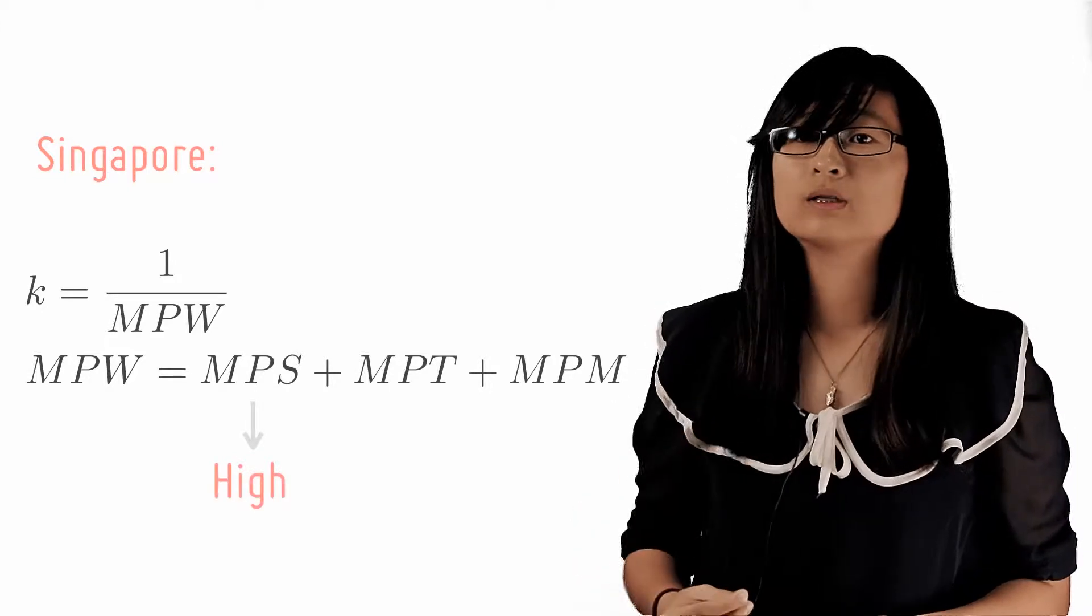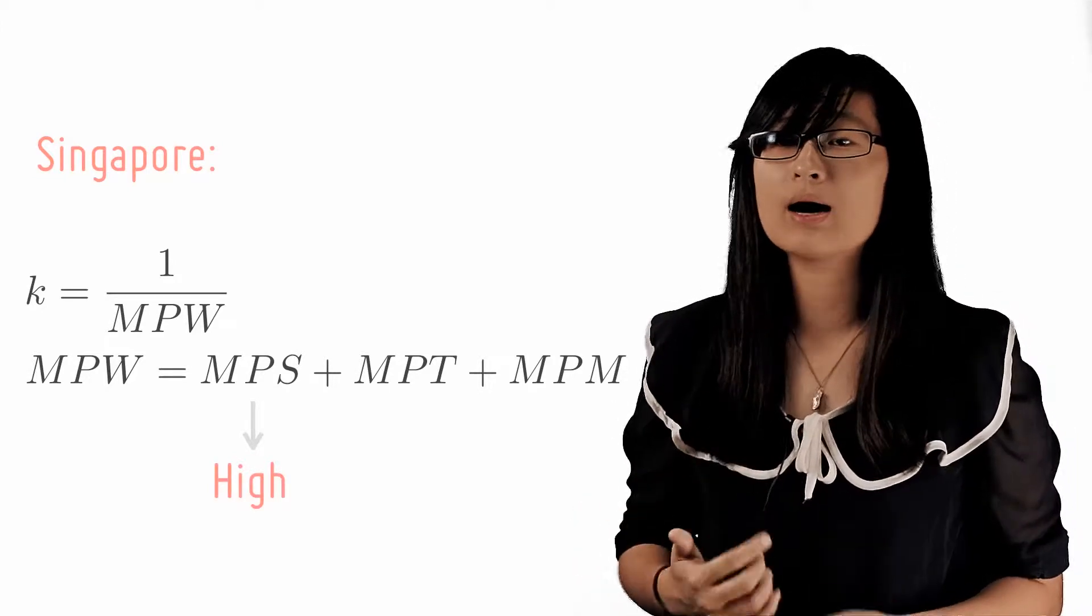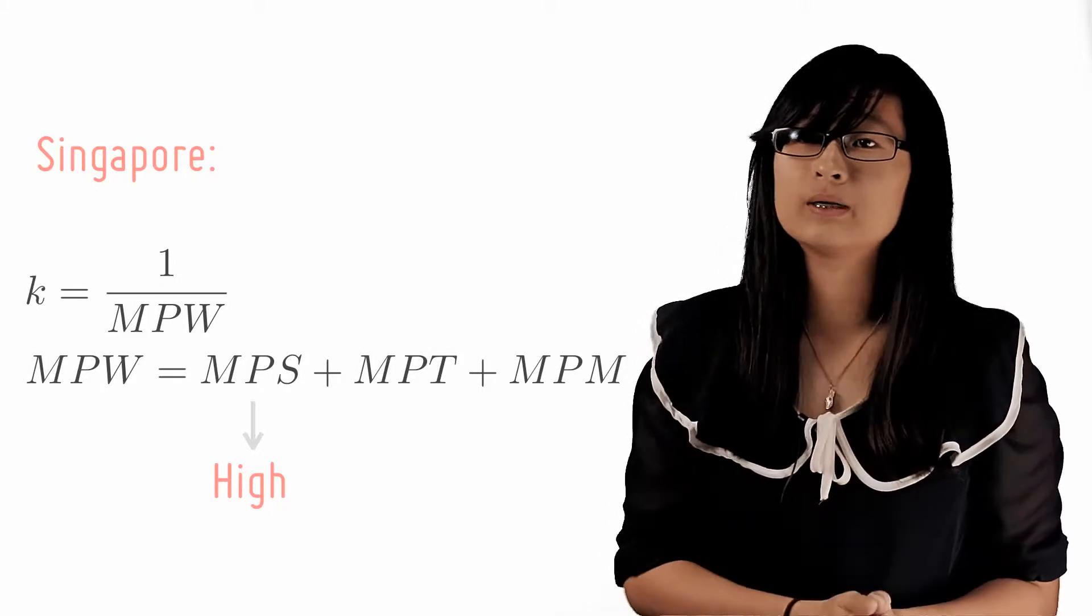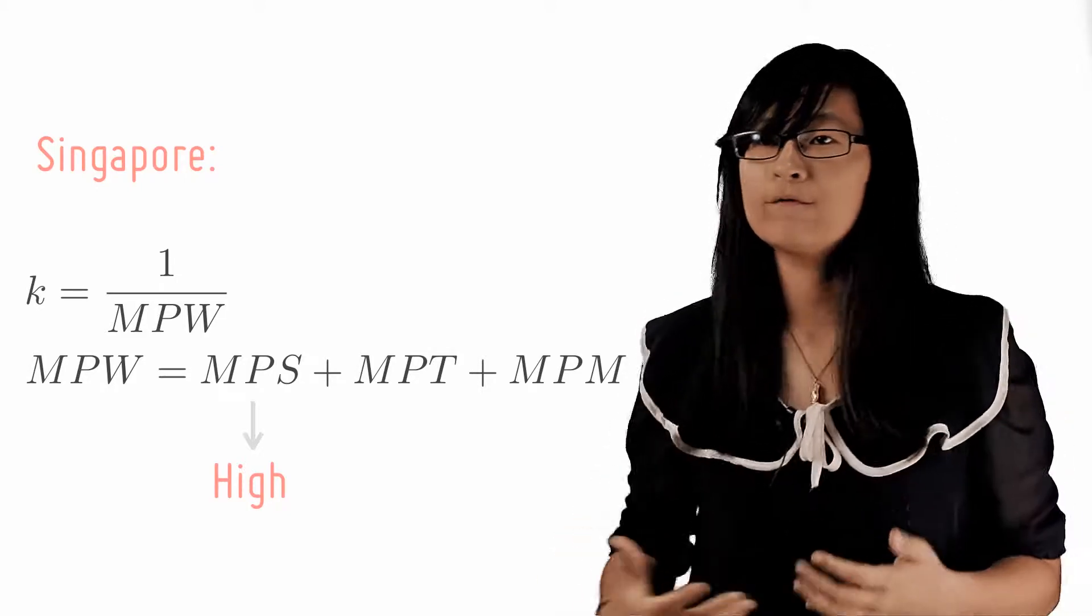Saving schemes like CPF in Singapore contribute to our high marginal propensity to save, and this is exacerbated by the Asian mentality to save for a rainy day.